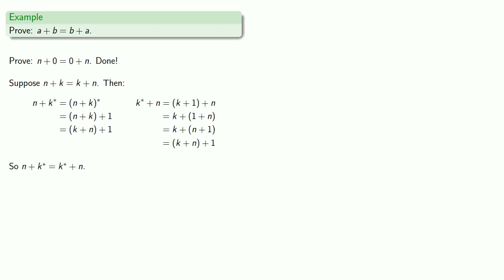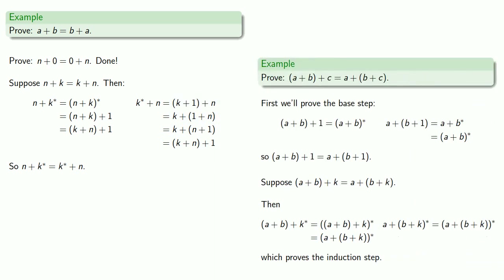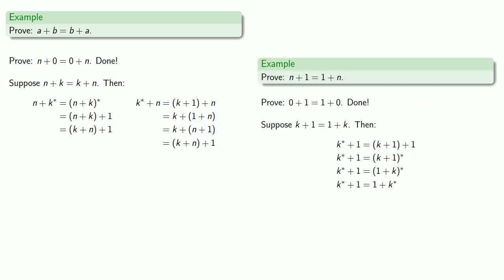Now we can prove commutativity. We proved the base step, then tried to prove the result for the successor. But in order to do that, we needed associativity. So we proved associativity, which allowed us to regroup the one plus n. But then we needed to prove that one plus n was equal to n plus one. So we proved n plus one equals one plus n, which allowed us to reverse. Associativity allows us to regroup, and so n plus k star is equal to k star plus n. That proves our induction step and gives us our proof of commutativity.